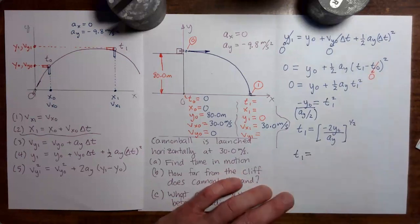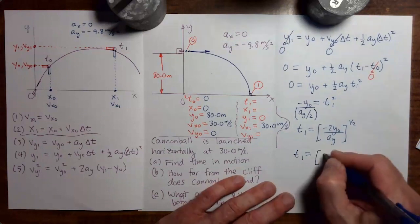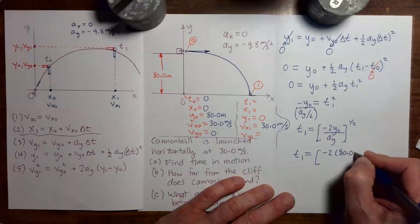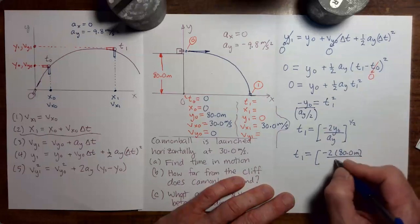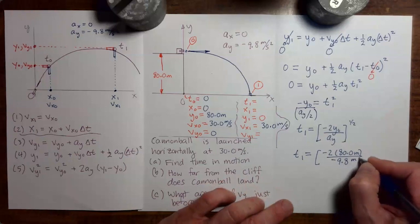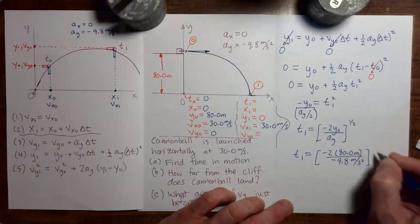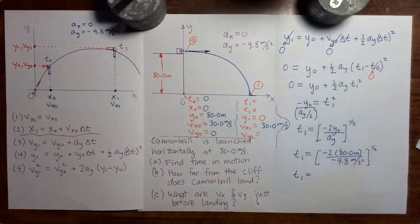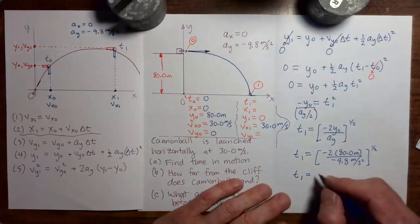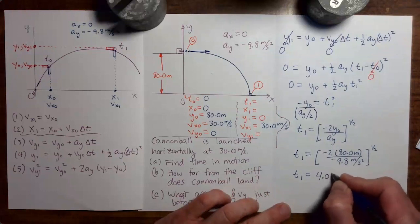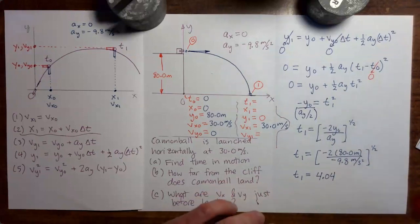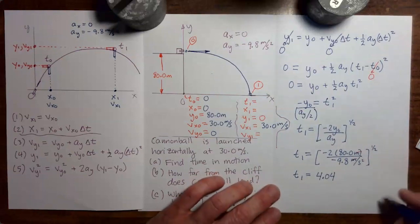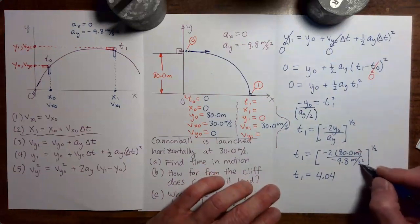Now making the substitution along with units, we have minus two times 80 meters. ay is minus 9.8 meters per second squared. The numerical value I get here is 4.04. Now let's check the units. So meters cancels meters.